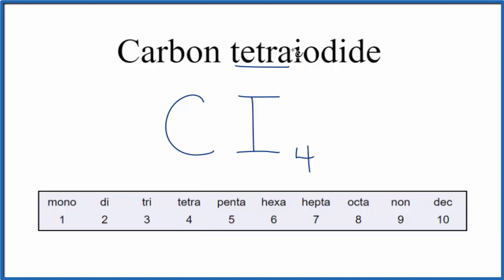That makes the formula for carbon tetraiodide, CI4. Note that with carbon, even though we have one carbon atom, we don't write mono in front of it because it's the first element in our formula.